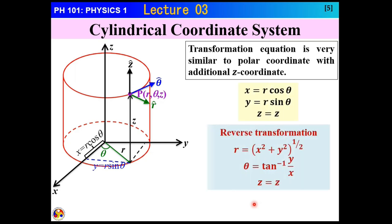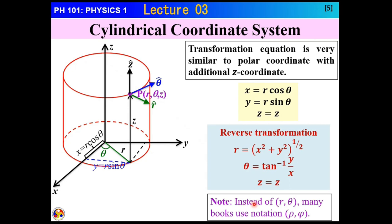If we want to transfer from one coordinate system to another, the relations are: x equals r cos theta, y equals r sin theta, and z equals z. The reverse transformation gives r equals square root of x² plus y², theta equals tan inverse of y over x, and z equals z. You can go back and forth between cylindrical and Cartesian using these transformations.